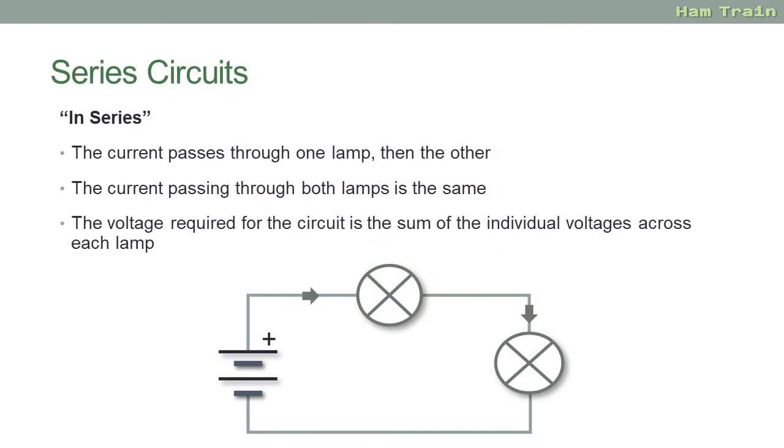So just to recap on series circuits: The current goes through one lamp and then the next. It's the same current flowing through both lamps, and the total voltage for the circuit is the sum of the individual voltages across each lamp. So in that previous example, a three volt battery, 1.5 volts through the first one and 1.5 through the second one. Hopefully that's a little bit clearer.